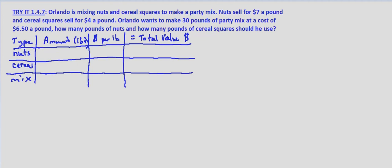So let's go ahead and fill in. I made a table where we've got type: nuts, cereal, and mix, the amount in pounds, the dollars per pound, the cost per pound, and the total value in dollars.